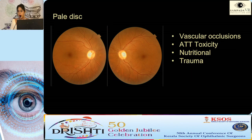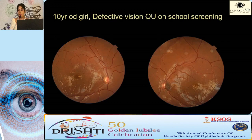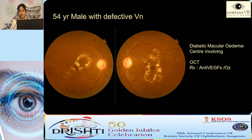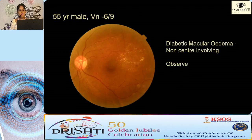Pale disc is associated with vascular occlusions, nutritional causes, and trauma. Here is a 10-year-old girl with optic disc hypoplasia. Coming to the posterior pole: diabetic macular edema can be center-involving as shown here, or non-center-involving. Depending on the edema, visual acuity, and symptoms, you can treat with anti-VEGF injections. For non-center-involving edema, you can observe or go for focal laser.